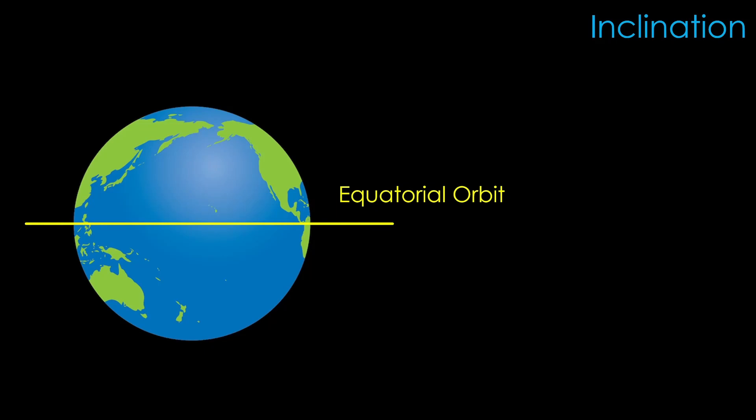Inclination describes how tilted the orbit is compared to the Earth's axis. An orbit that goes directly around the equator of the Earth is not surprisingly known as an equatorial orbit, and an orbit that goes over the Earth's poles is known as a polar orbit. We would say that the equatorial orbit has an inclination of 0 degrees, and a polar orbit has an inclination of 90 degrees. There are inclinations between those two orbits. You might choose to launch to an inclination of 51.6 degrees.